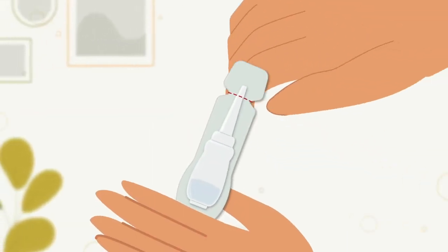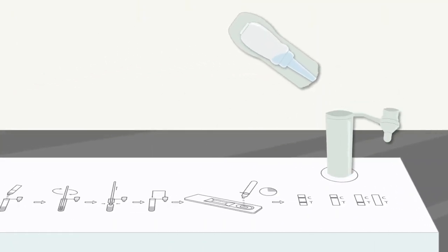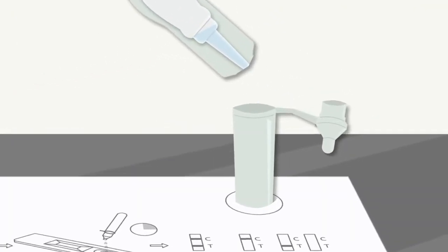Open the buffer bottle and squeeze all the liquid out and pour it into the extraction tube. Be careful that the bottle doesn't touch the tube.